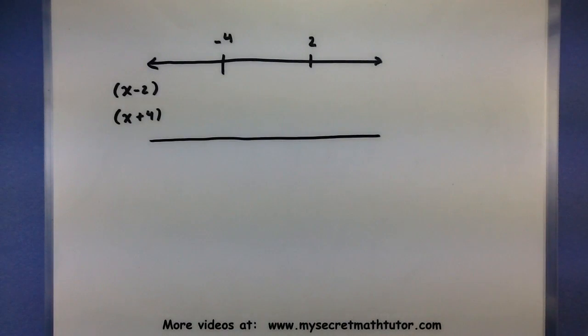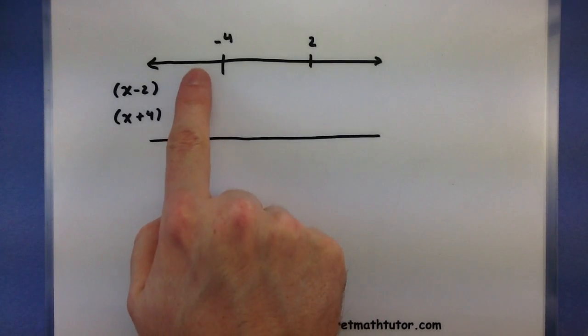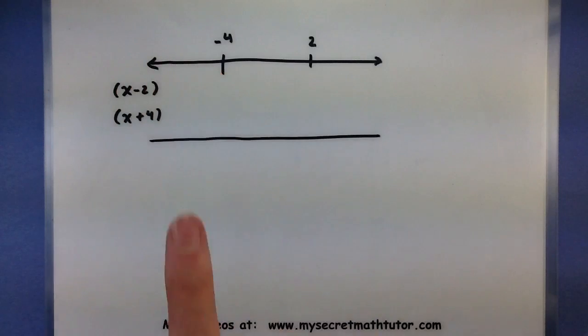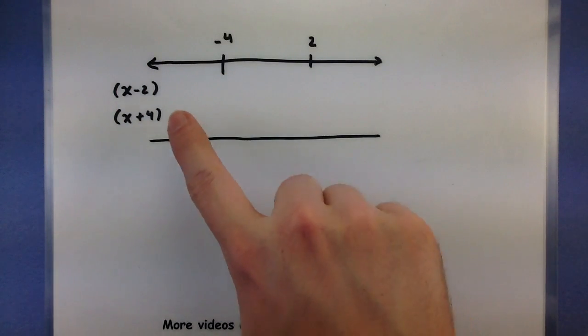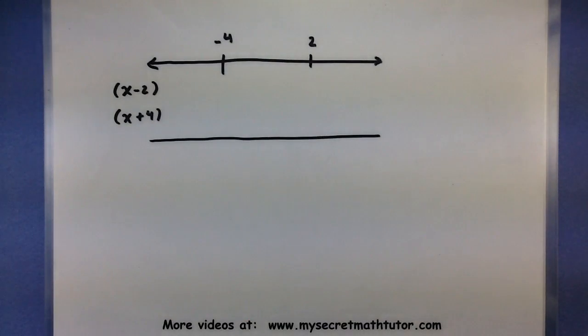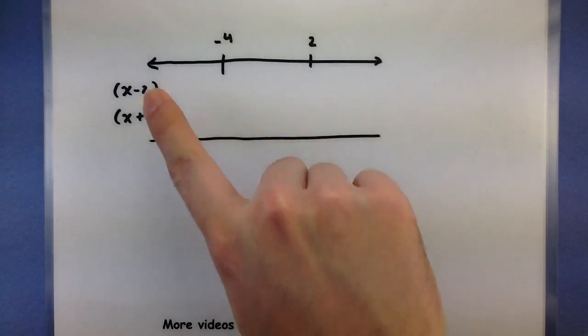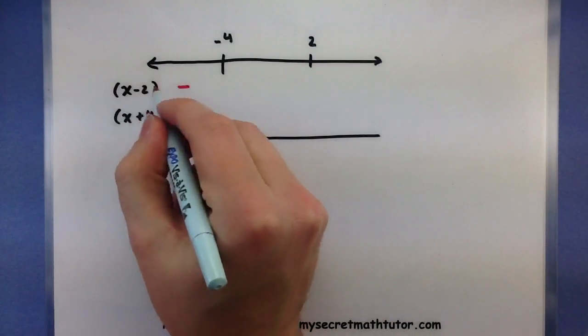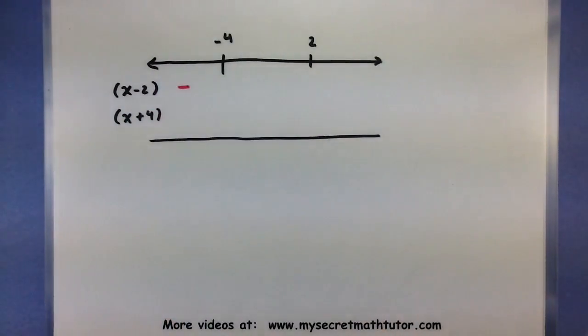Alright, watch how this works. First, I'm going to choose a number somewhere in this first interval. So I could choose anything between negative infinity all the way up to negative 4. So maybe I'll just choose something like a negative 5. And I'm going to plug that right into this first factor. What I'm looking for is when I plug it in, is it positive or negative. So negative 5 minus 2, that would be negative. So that's my clue that this little guy is always negative on this interval.